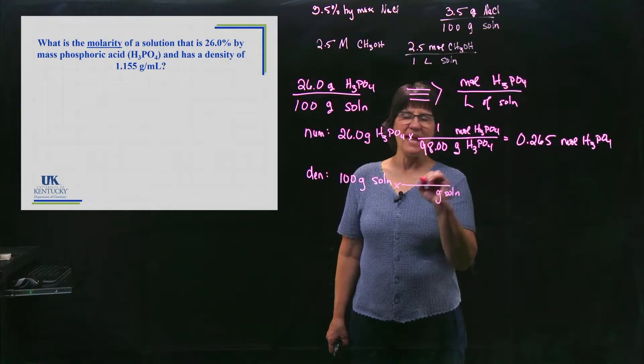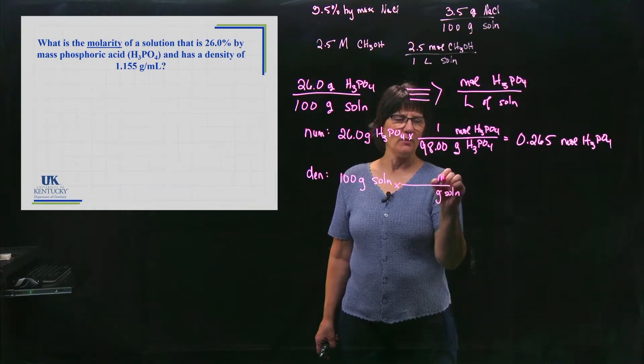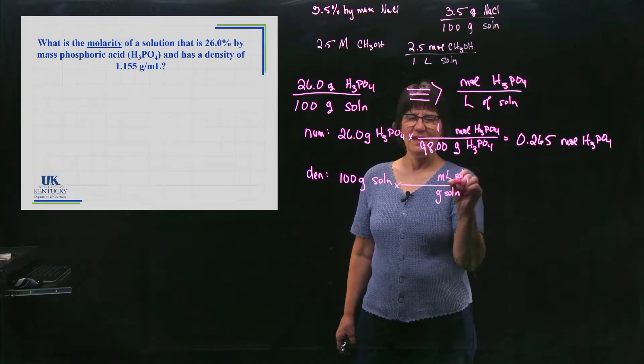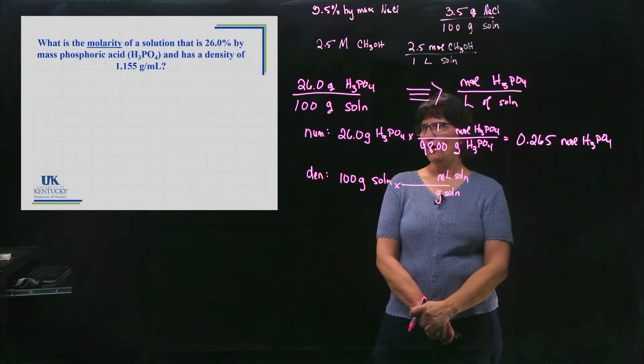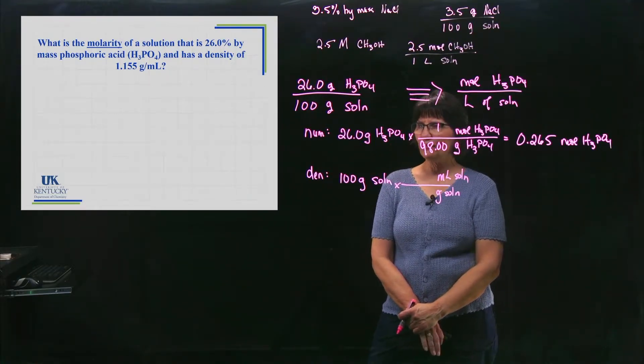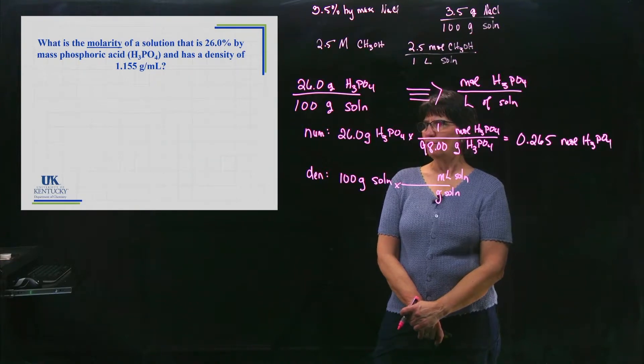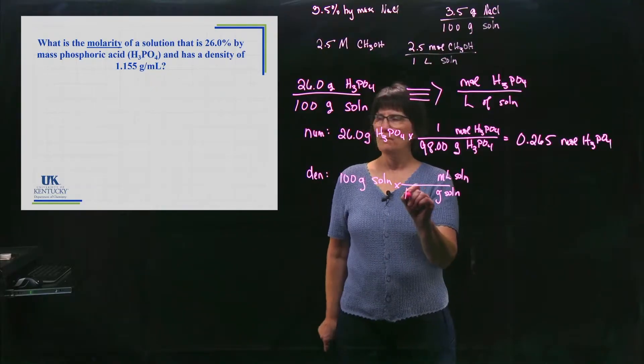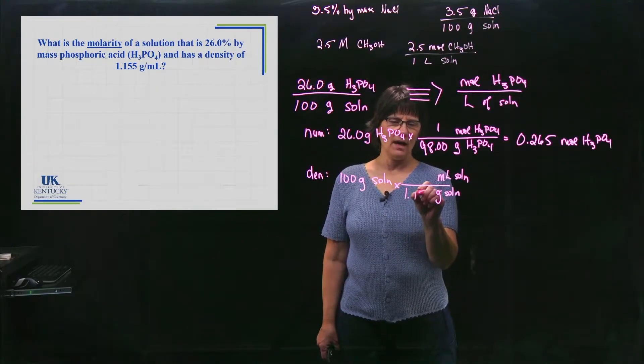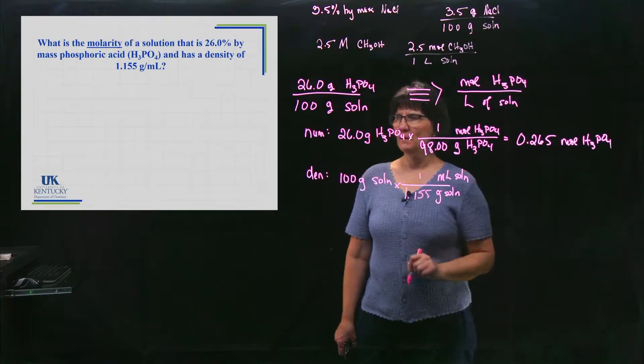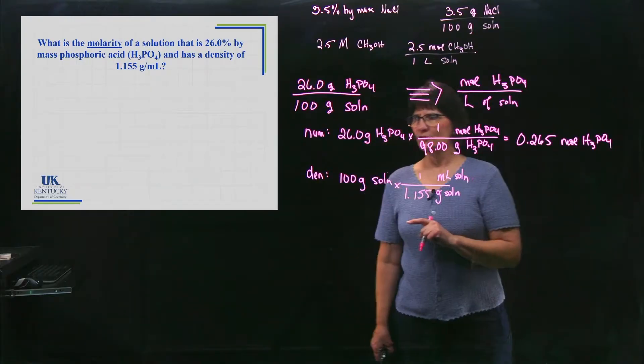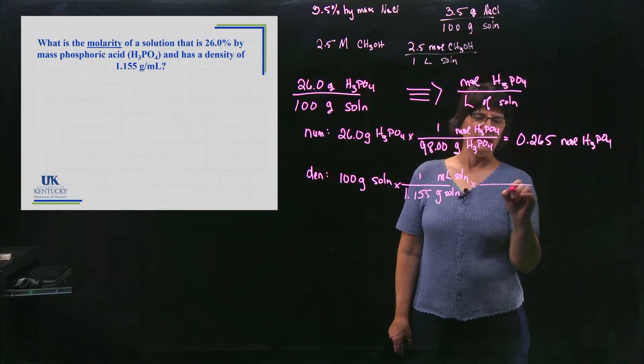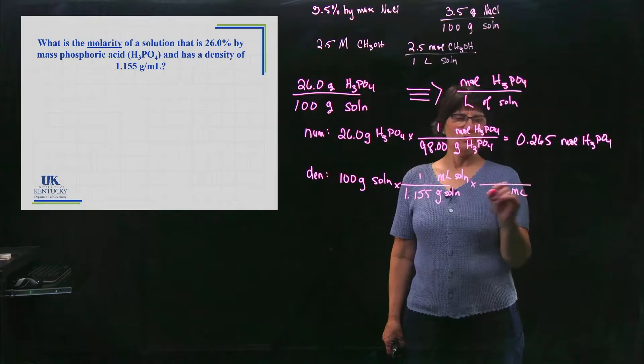They gave me the density, and it's in grams per milliliter. So I can say, I don't want grams of this solution. They gave me the density, so I know the milliliters of the solution. That's not the density of the water that it's dissolved in. It is the density of the solution. It says that the solution has a density of 1.155 grams in a milliliter.